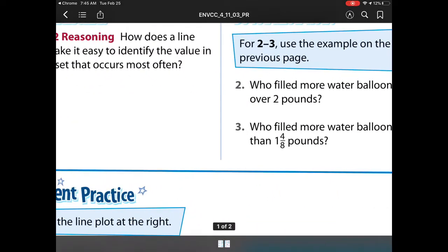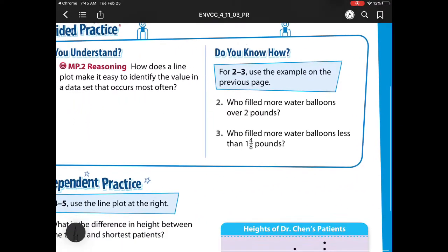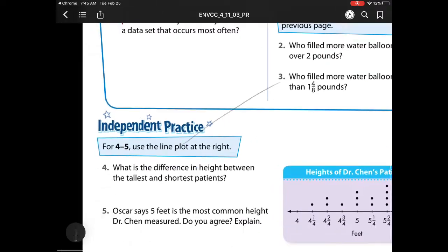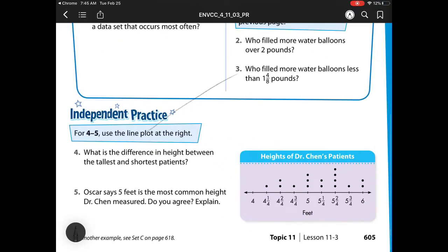We're on 11-3, working with line plots to solve problems. We did our guided practice in class, so just like always, we're going to move on to our next part. Question number 4: what is the difference in height between the tallest and shortest patient?